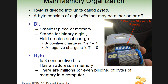Binary code uses ones and zeros — one is on, zero is off. An easy visual analogy is the DIP switches in a garage door opener: up is on, down is off. A bit is the smallest unit of memory, and a byte consists of eight consecutive bits. Each byte has an address in memory, which we'll reference later when looking at variables and how code stores data.